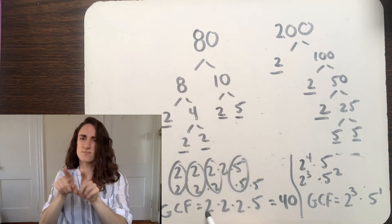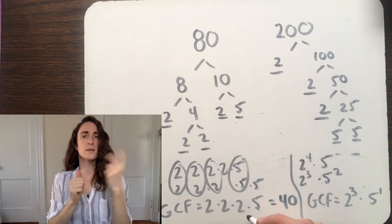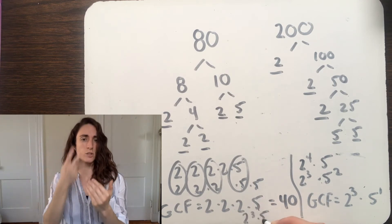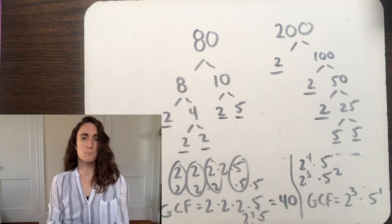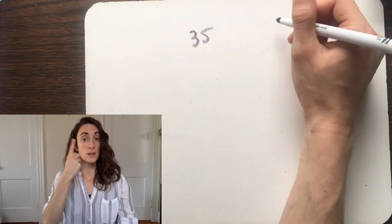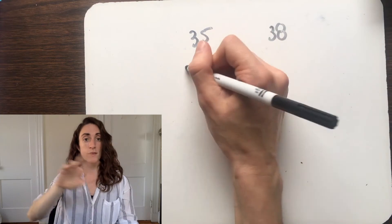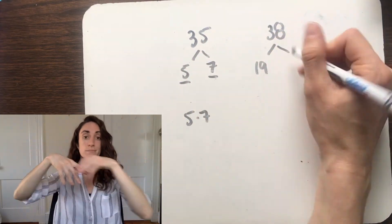Using exponents can be a helpful and quick way to find the GCF, but it's also fine to write out the repeated multiplication if that helps you visualize the shared elements. Let's look at one more example, finding the greatest common factor of 35 and 38, by first finding their prime factorizations.